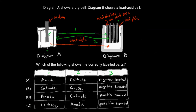The correct answer was B. Looking at the dry cell: the graphite rod with manganese dioxide is the cathode, so 1 is cathode. The zinc casing is the anode, so 2 is anode. Electrons flow from negative to positive, so 3 is the negative terminal. Therefore B is correct.